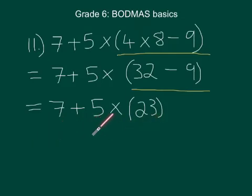because multiplication comes before addition and subtraction. So I need to then do this multiplication, which is 5 times 23. And the 5 times 23 is going to give you 115.